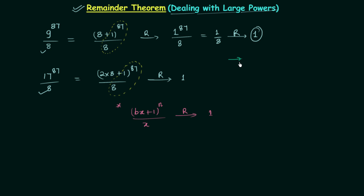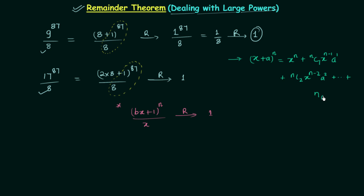Now we will see the proof of this method. Let's say we have (x + a) raised to power n. We can write this as: x^n + nC1 · x^(n−1) · a^1 + nC2 · x^(n−2) · a^2 + ... all the way to nCn · x^n · a^n, and we write the last term simply as a^n.